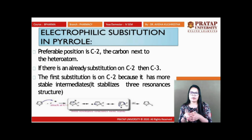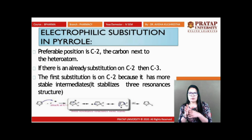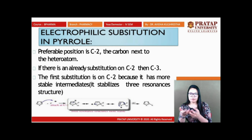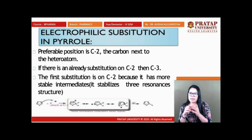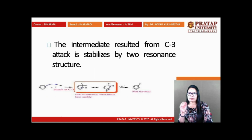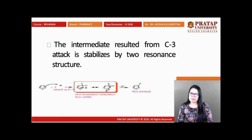C2 substitution is preferred because it has a more stable intermediate, stabilized by three resonance structures. The C3 position has a less stable intermediate stabilized by only two resonance structures. For C2 position, three stabilized resonance structures are possible, but for C3 position only two resonating structures are possible. Therefore C2 position is always preferable over C3 in electrophilic substitution.